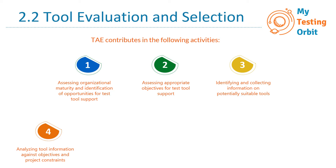Number four is analyzing tool information against objectives and project constraints. Every tool has different strengths, but you need to make sure you are evaluating and analyzing the tool against the objectives you require. For example, if your objective is to increase the reliability of testing and there are project constraints, then you have to make sure the tool you are selecting aligns to these requirements.